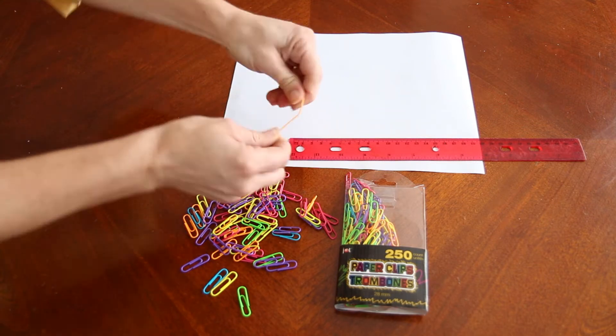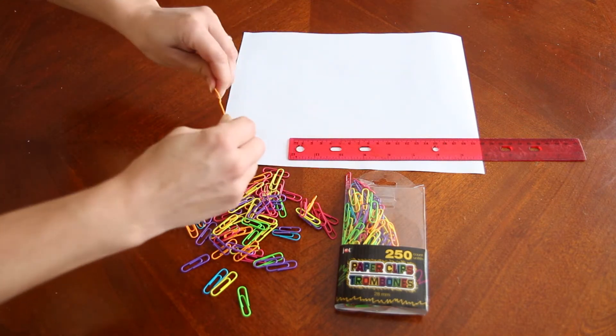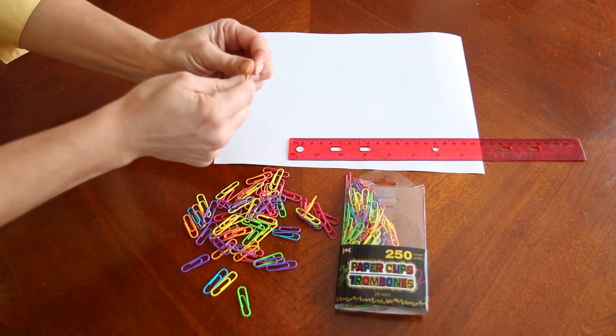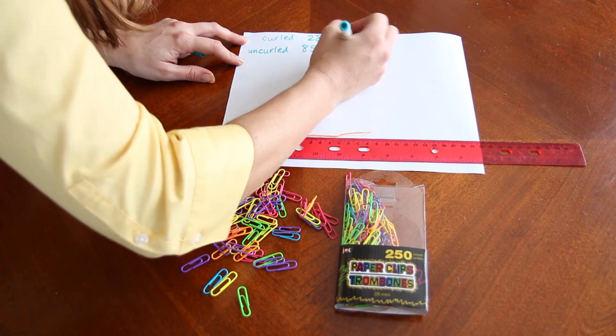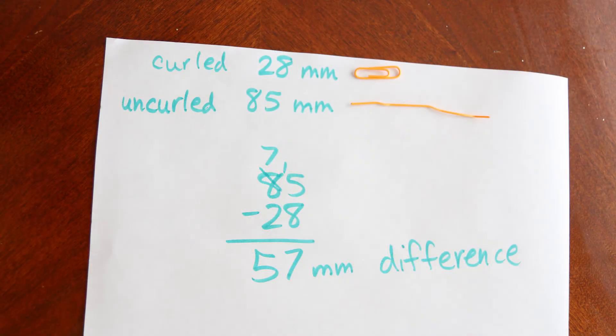The next thing I wonder about as I measure it is, how long is the paper clip if I take the bends out of it and make it into one straight line? Compare these lengths. What is the difference?